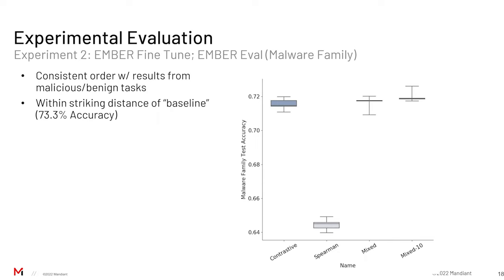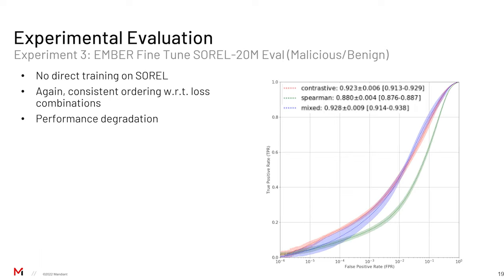In our second experiment, we looked at the family classification task using family labels on EMBER. What we find is a consistent ordering in terms of which embedding type we use. In this case, we're actually within very close striking distance of the baseline raw classifier fit directly on the features.